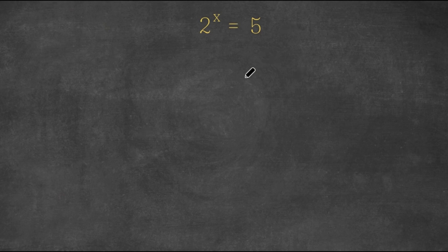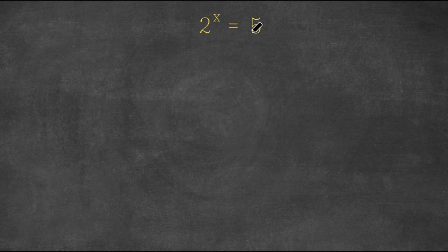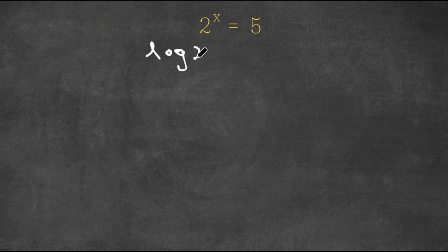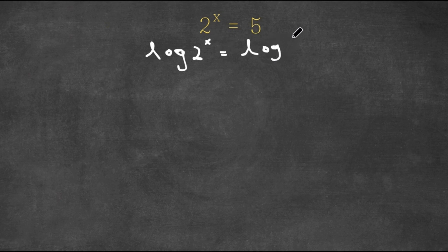In today's video, I'm going to be teaching you guys how to solve this exponential equation. So we have 2 to the power of x is equal to 5. Now, what I'm first going to do is I'm going to take the log of both sides. So now I have log of 2 to the power of x is equal to log 5.